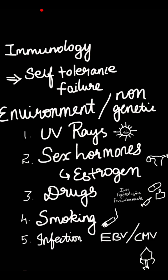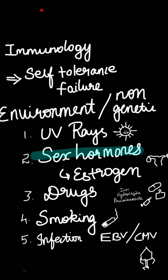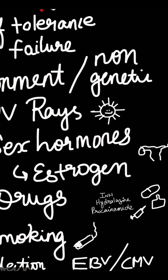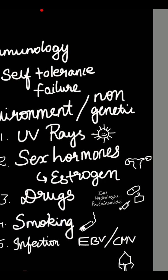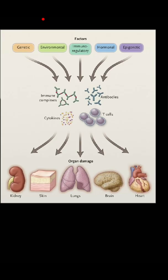The next factor is immunology. Immunology involves self-tolerance failure. Self-tolerance is the ability of the human body to recognize self-cells and not react against them. In SLE patients, there is a failure in this self-tolerance system. Environmental factors — non-genetic factors — include UV rays, which can precipitate SLE as a triggering factor, sex hormones like estrogen, and drugs. The main three drugs are isoniazid, hydralazine, and procainamide. Other factors include smoking and infections like Epstein-Barr virus and cytomegalovirus, which can also trigger SLE.